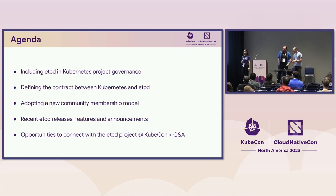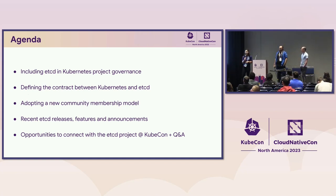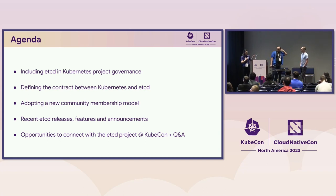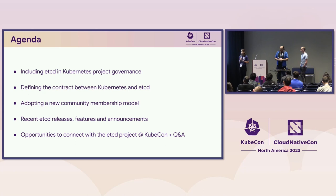Now let's get into our agenda. Today we'll first start with sharing great news about etcd and SIG-etcd. Then Merrick will give us a deep dive about the API contract between Kubernetes and etcd. Followed by that, James will give us a detailed introduction of the new community model and recent etcd releases and features. We'll close by providing a list of etcd opportunities at KubeCon and then open up for questions.